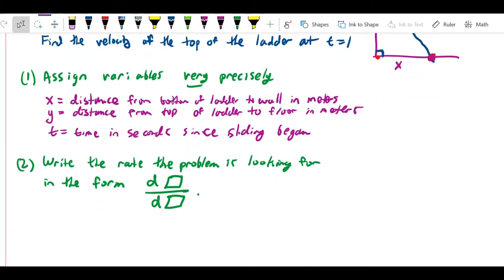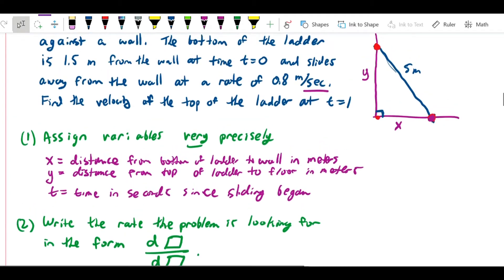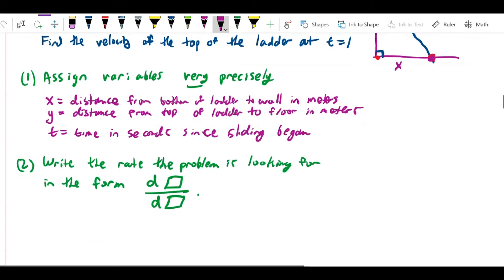What that means is all speeds or all velocities are going to be measured in some amount of distance per some amount of time. We're asking how fast this distance changes with respect to time, or in other words, the ratio of dy, the change in y, over the change in time. That's what we're looking for in the problem.